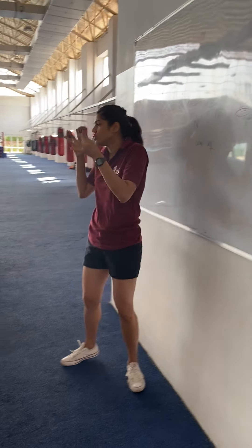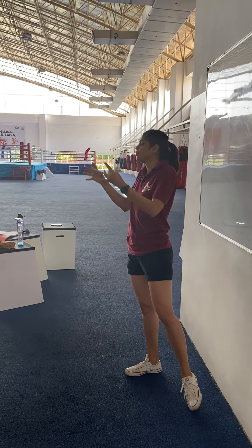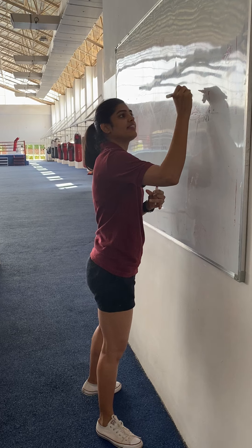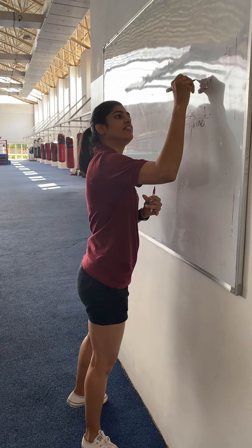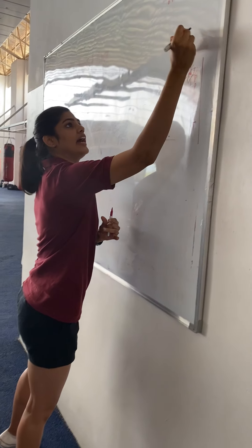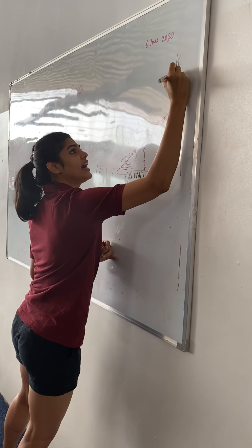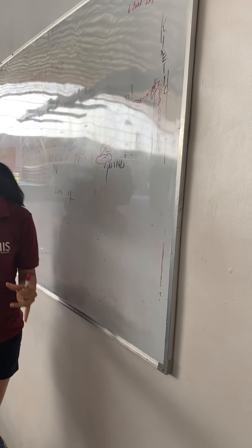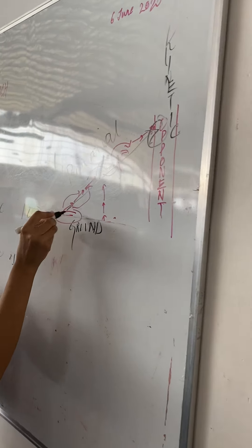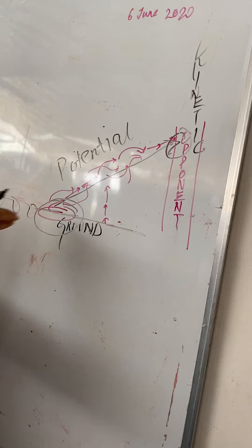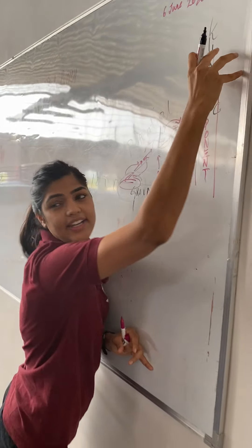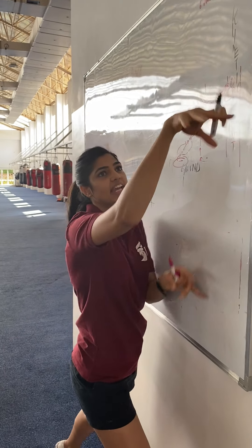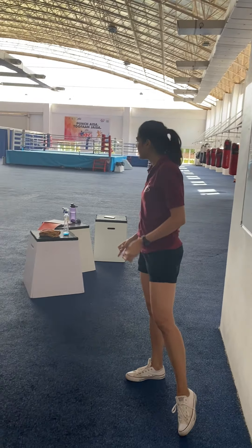I know I'm throwing a lot of terms, but I'm trying to give you a gist of what we're going to be talking about in this session. For example, you use one type of energy here and you change it to another kind of energy when you throw a punch, but it's the same thousand newtons that you generated when you used the ground.